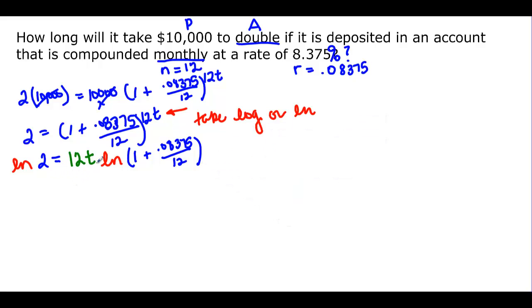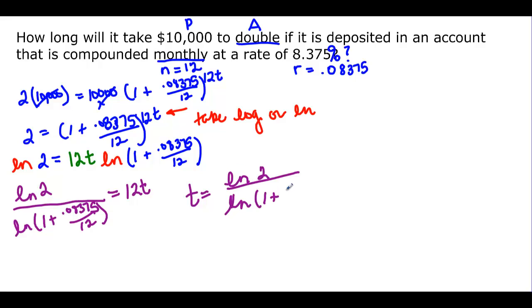So I'm ready to divide off the natural log. That will give me the natural log of 2 divided by the natural log of that big number, and that's going to equal 12t. So t is going to be equal to the ln 2 divided by the ln of 1 plus 0.08375 divided by 12, and then all of that would be divided by 12 to get that t all by itself.